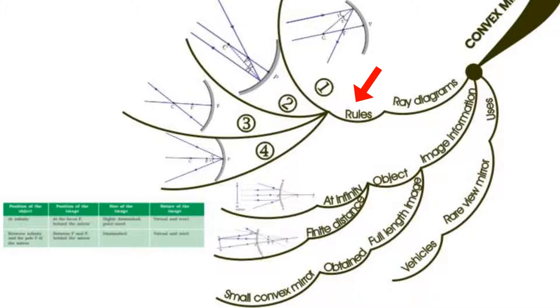Image formation by convex mirror: formation of images when the object is at different positions is shown in the corresponding figures. You will learn more about the image formation of convex mirrors in the coming video.